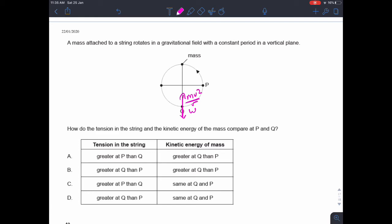And so the tension in the string must be highest at Q because at P all it has to do is provide the centripetal force and it doesn't have to balance the weight. So the tension in the string must be greater at Q than at P. So it's not A and it's not C.